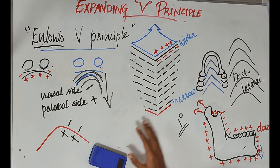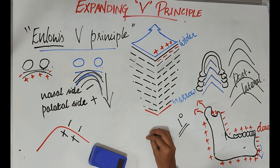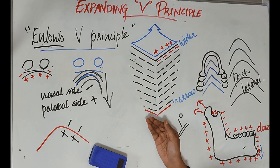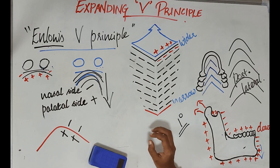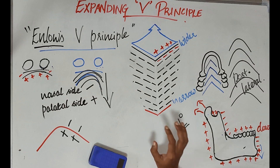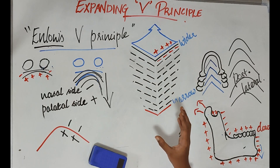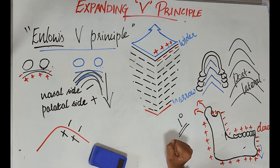This is the example of the expanding V principle in the palate and mandible — nothing but bone deposition and resorption occurring continuously: deposition on the inner aspect and resorption on the outer aspect. Finally, there is growth and movement of the bone from the narrow end of the V toward the wider end, resulting in expansion and growth of the bone.